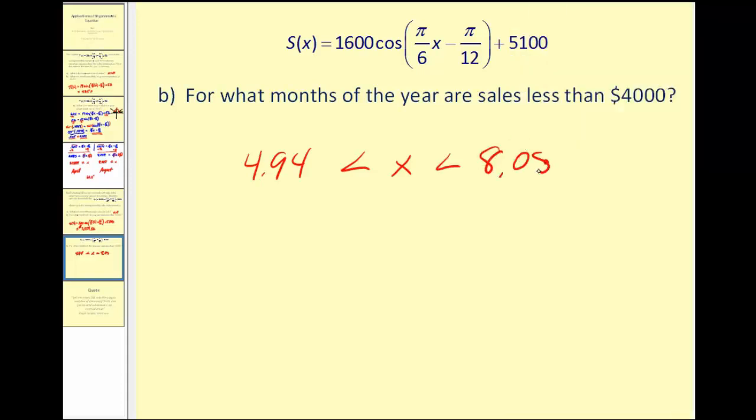So when x is between four point nine four and eight point zero five, the sales are below four thousand dollars. Well this is very close to the fifth month, which would be May. And the eighth month would be August. The sales would be less than four thousand dollars.